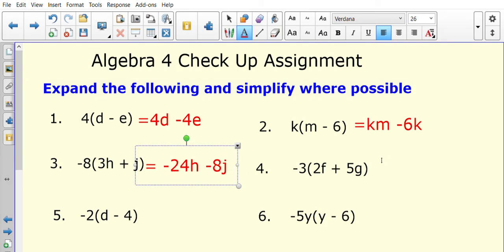Number four, so negative 3 times the bracket. So negative 3 times positive 2f will be negative 6f. And then negative 3 times positive 5g will give me negative 15g.